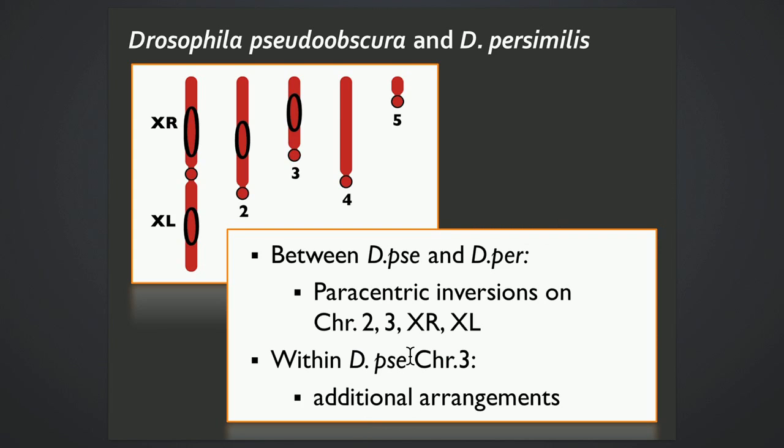We're utilizing both interspecies and within-species crosses. So I have an interspecies cross where pseudoobscura and persimilis differ at inversions on the second and third chromosome, as well as two inversions, one on each arm of the X.